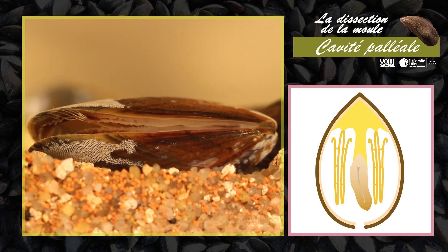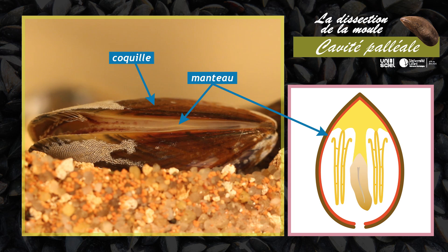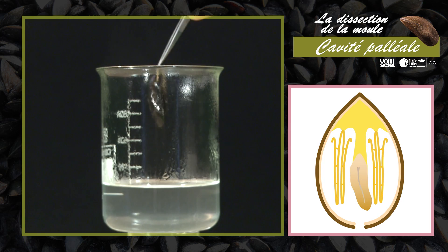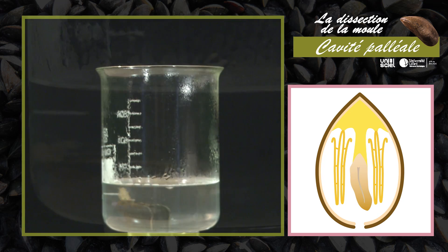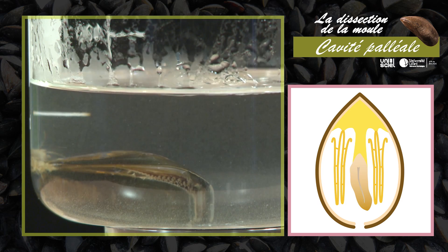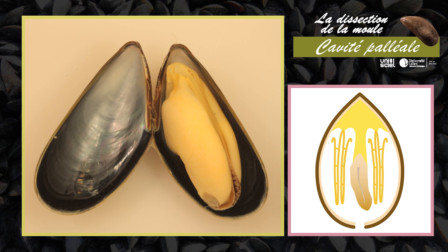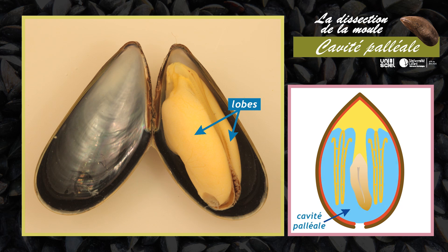Le corps mou de l'animal, protégé par la coquille, est complètement enveloppé par le manteau. Pour extraire l'animal de sa coquille, il faut le plonger quelques secondes dans l'eau chaude. Le manteau est divisé en deux grands lobes qui entourent la masse viscérale et délimitent la cavité paléale.